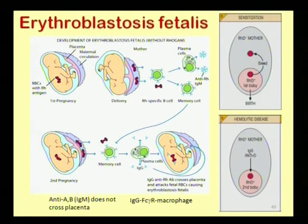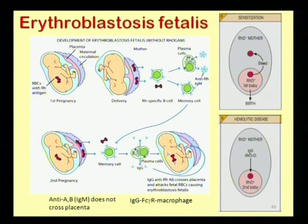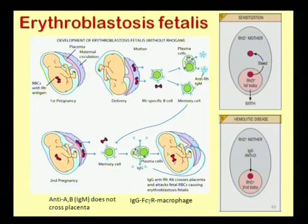In this case, erythroblastosis fetalis takes place, in which the liver and spleen of the baby are affected. In the worst cases, it may damage the brain or the baby may be born stillborn.